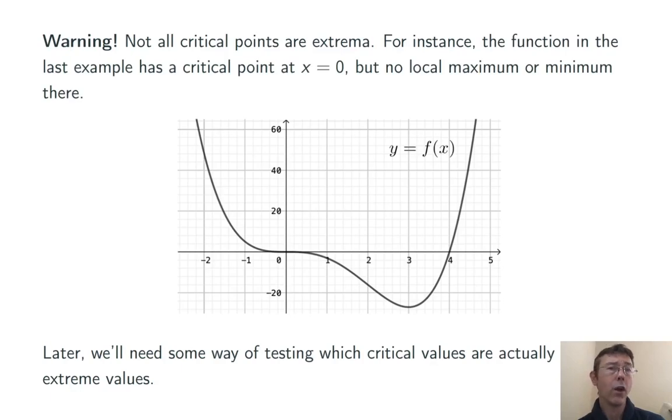Here's the actual graph of the function, and this raises an important warning. Critical points are candidates for local maxes and mins. They aren't guaranteed to be local maxes and mins. Here, at x equals 3, we do have a local minimum, and we can see from the graph that in fact it's a global minimum. However, at x equals 0, we have neither a local minimum nor a local maximum.